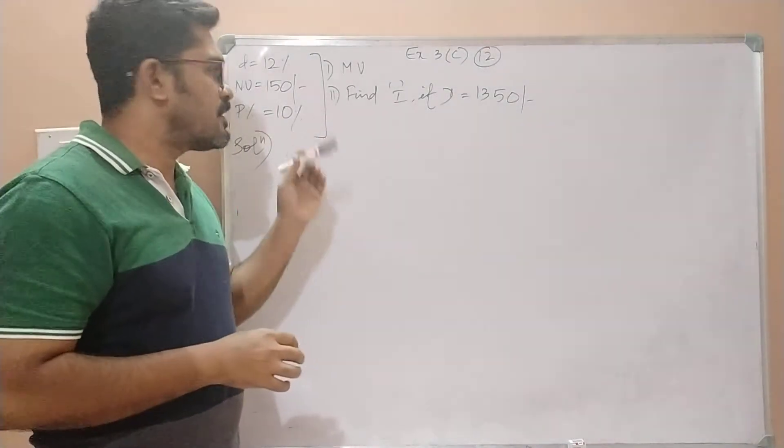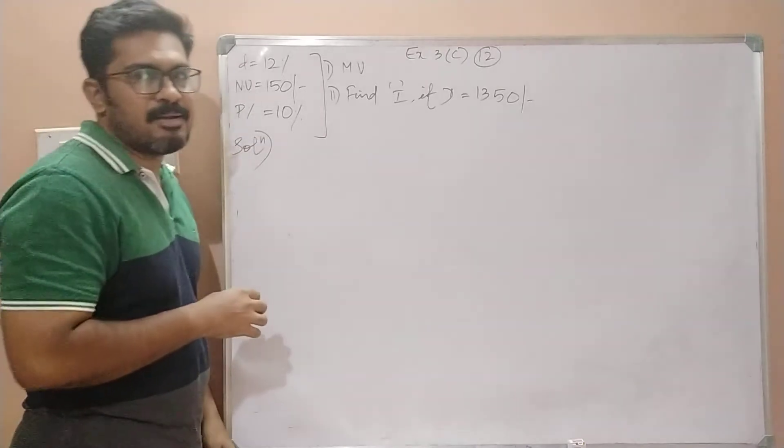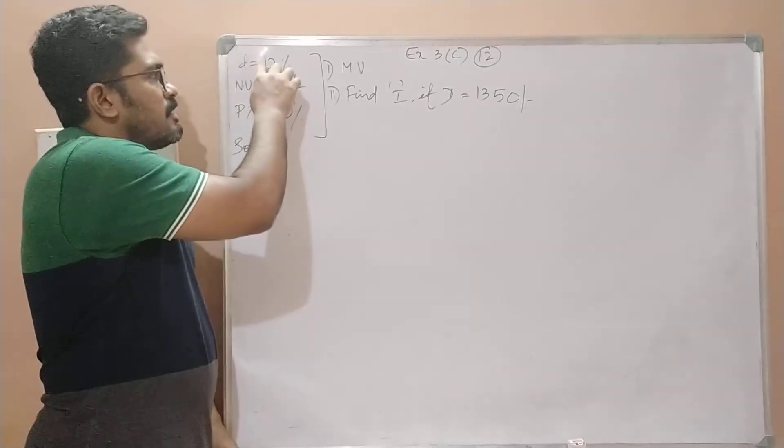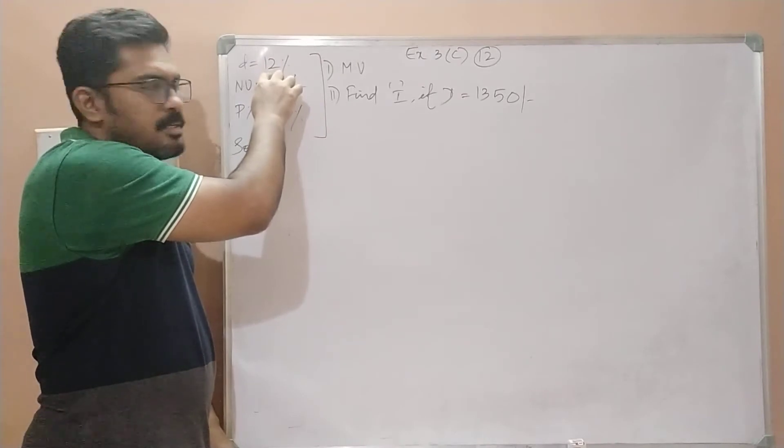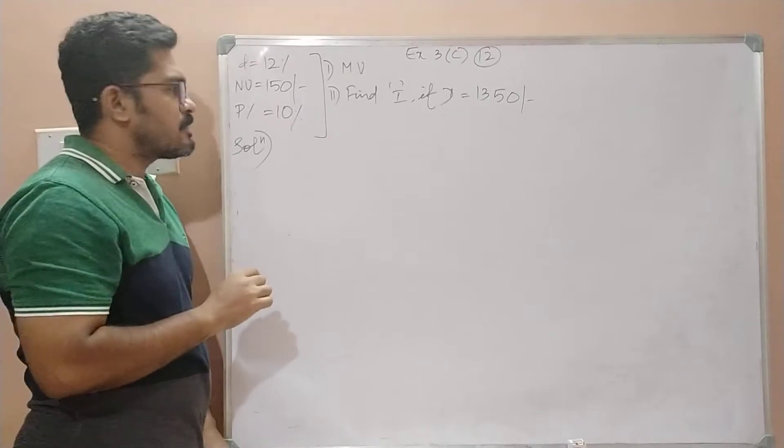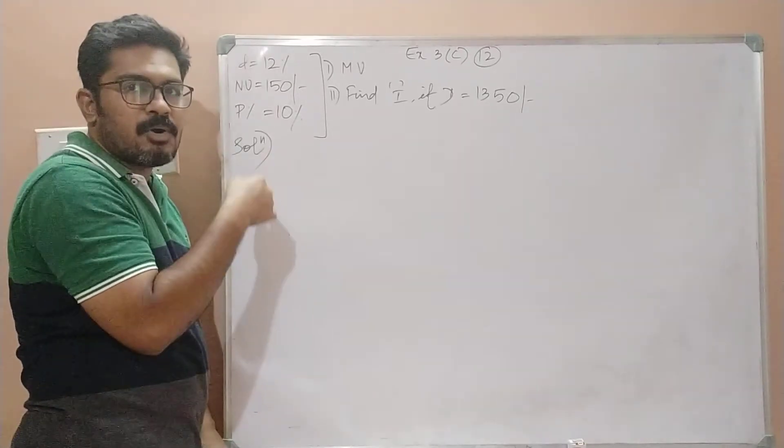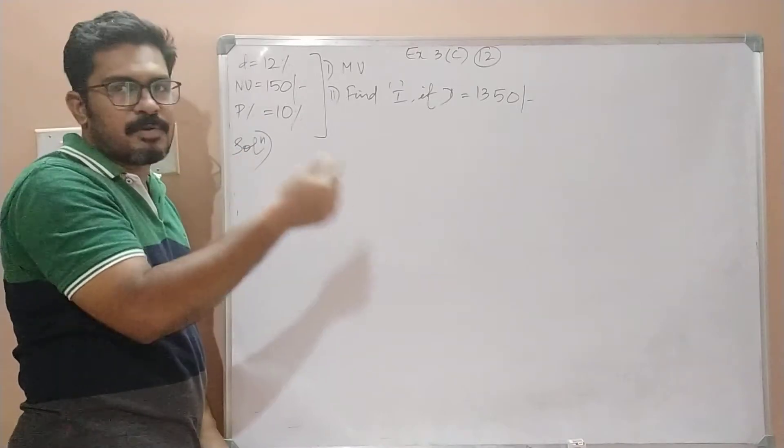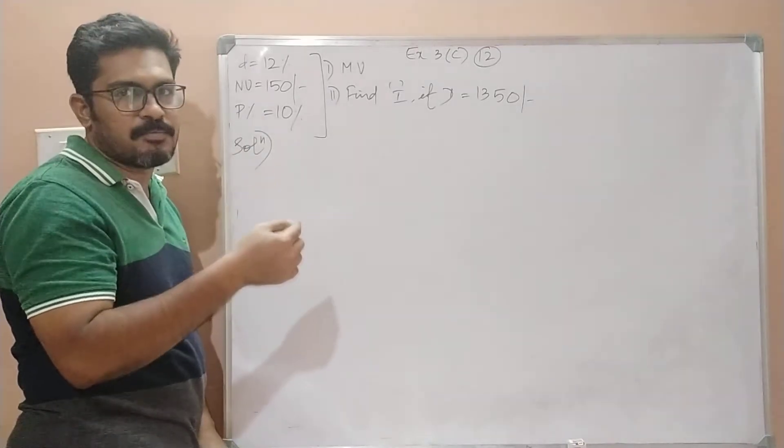So this is the data prepared according to this word problem. The dividend rate given by the company is 12%. The nominal value of one share is 150 rupees. The return percentage or the profit percentage - the meaning of return percentage and profit percentage is the same as I've told you before.